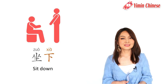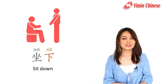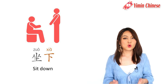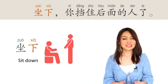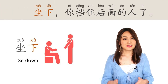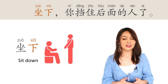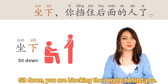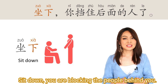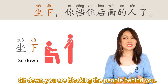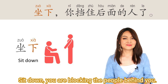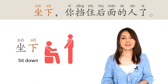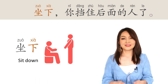坐下 — sit down. For example: 坐下, 你挡住后面的人了. Sit down — you are blocking the people behind you. 坐下, 你挡住后面的人了.